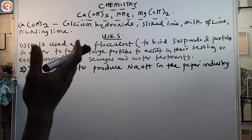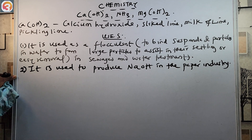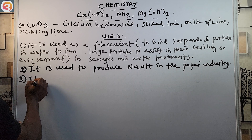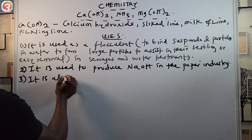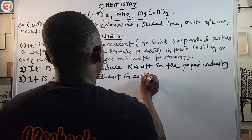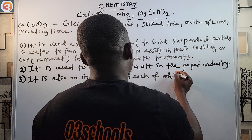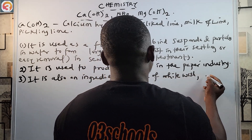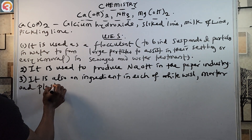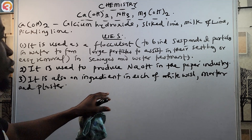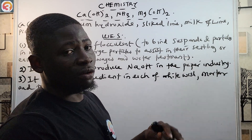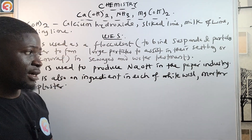Calcium hydroxide is also an ingredient in each of whitewash, mortar, and plaster. This is used for finishing or beautification purposes.